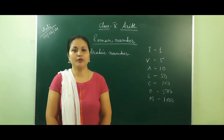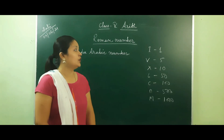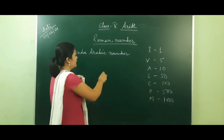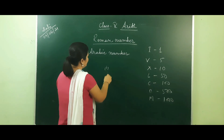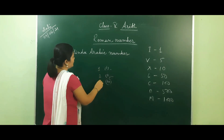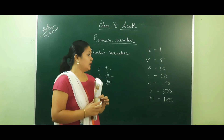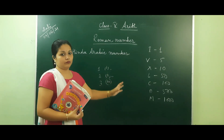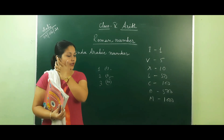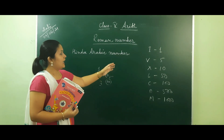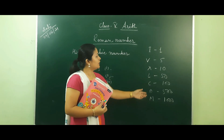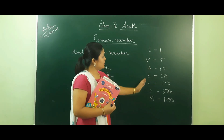Hello everyone, today we will start our new exercise about Roman numbers. I have written Roman numbers and Hindu-Arabic numbers here. Roman numbers are usually written in question papers — you can see one, two, three — these are called Roman numbers. Hindu-Arabic numbers like one, two, three are normally used for calculation. We use alphabets in Roman numbers, and this side shows the Hindu-Arabic equivalents — these are the alphabets you need to remember.